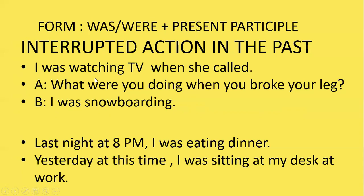Past continuous is used to talk about an interrupted action in the past. Example: 'I was watching TV when she called.' 'What were you doing when you broke your leg? I was snowboarding.' We use the past continuous to indicate that a longer action in the past was interrupted. The longer action is 'watching TV,' and the interruption is 'she called' — expressed in simple past. The interruption is usually a shorter action in simple past.